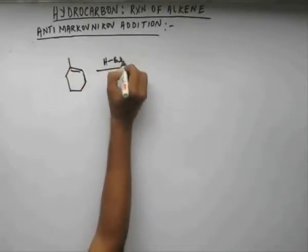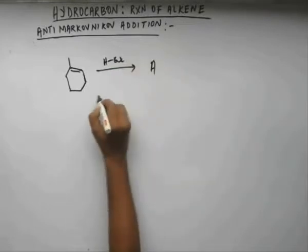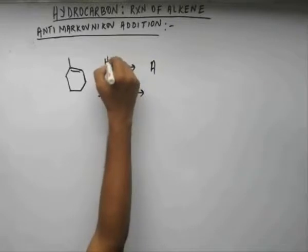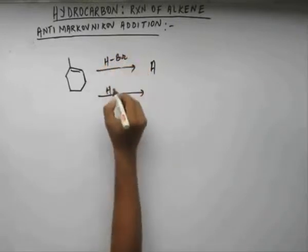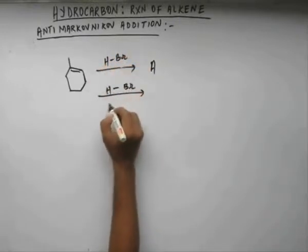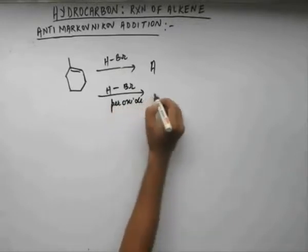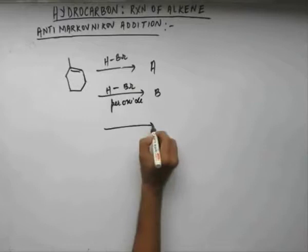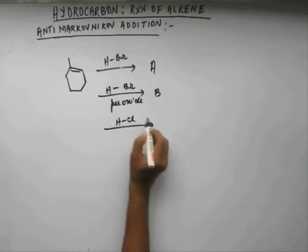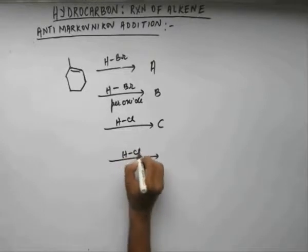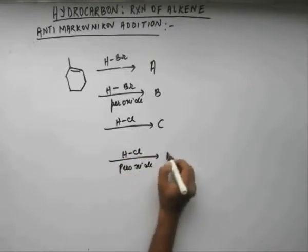Suppose I give you HBr, that gives A. I give you HBr with a peroxide, that gives me B. I give you HCl, that gives me C. I give you HCl with a peroxide, that gives me D. Identify A, B, C, D quickly.